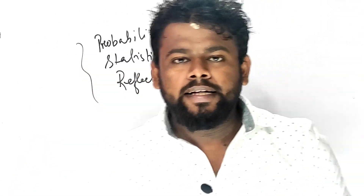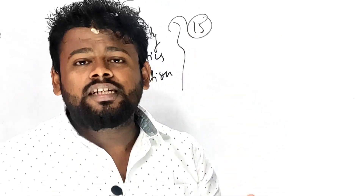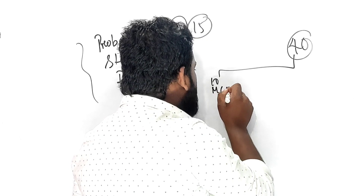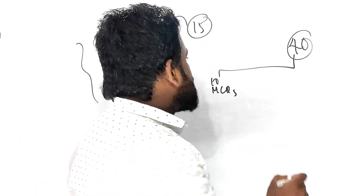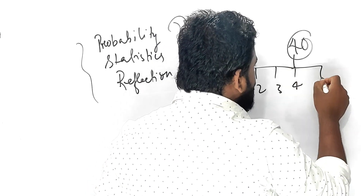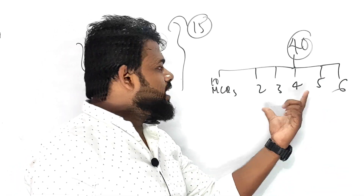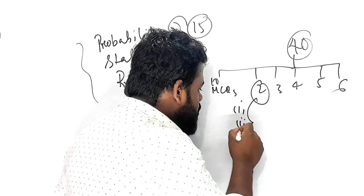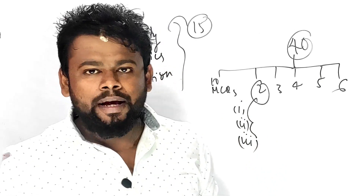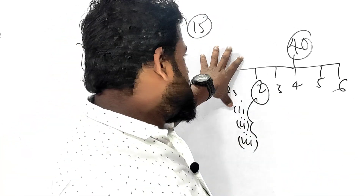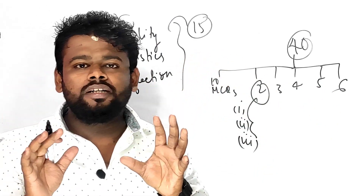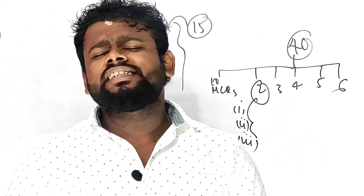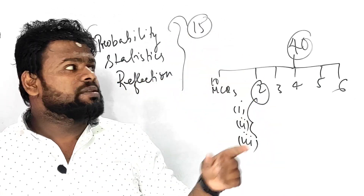Coming to the ICSE Class 10 specimen paper, you will be getting 40 marks. Out of that, 10 marks will be MCQs. Section B will have five questions — let us assume questions numbered three, four, five, and six — out of which you have to attempt any three questions, each consisting of three parts: part one, part two, and part three, worth three, three, and four marks. The top 10 MCQs coming in the examination are from Reflection, Statistics, and Probability.